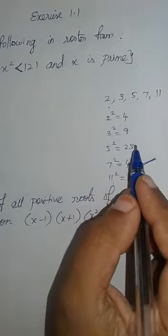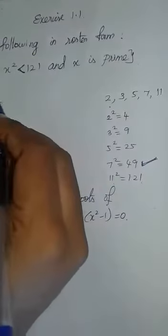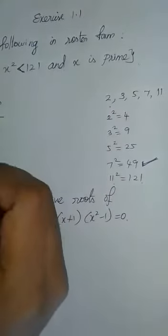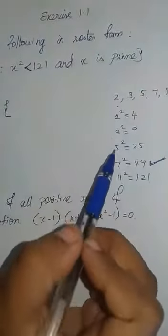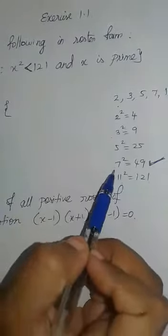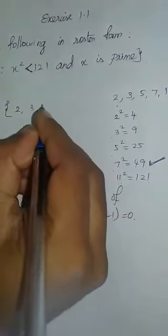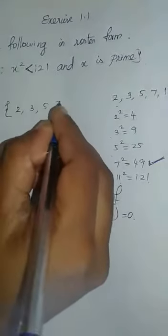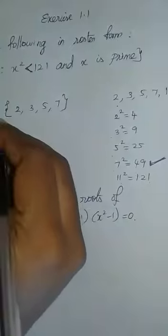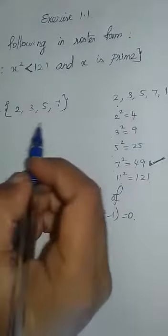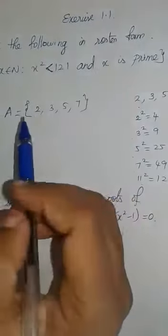Therefore the values of X must be 2, 3, 5, 7. So this is the roster form of the given set, and I named the given set as A.